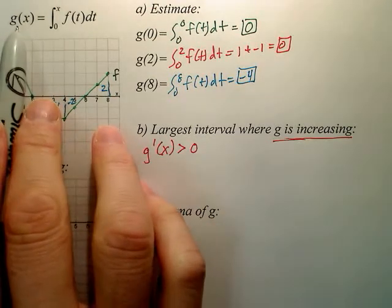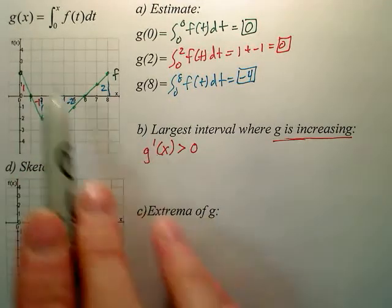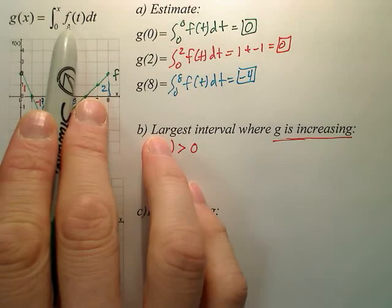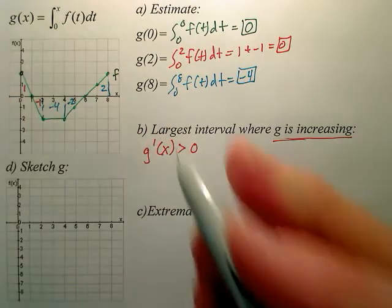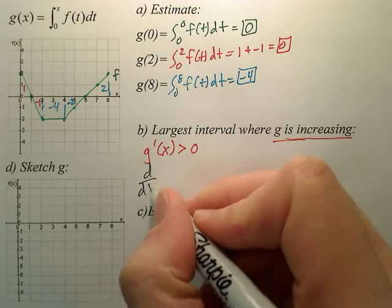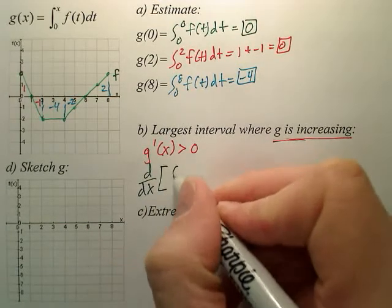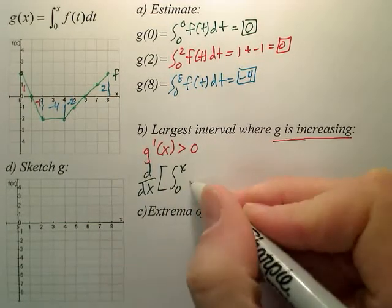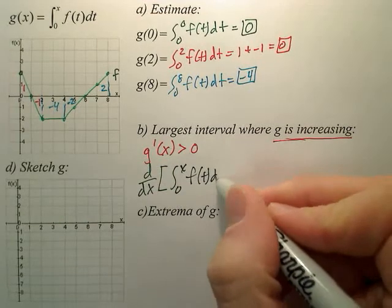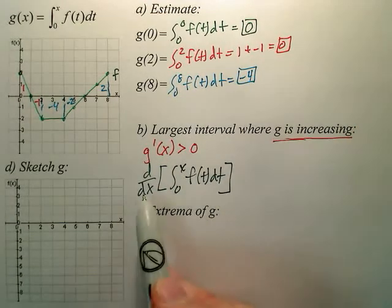You also need to look at this and go, okay, what is g prime? Well, it means to derive g, which means I'm also going to derive this. So when you derive this, meaning d dx of the integral from 0 to x of f of t dt,